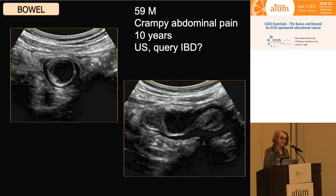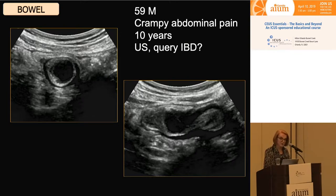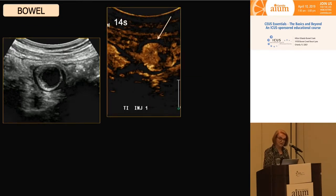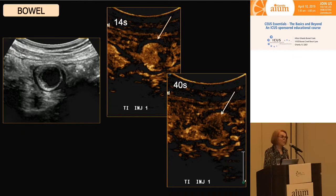Let's change gears now and look at a few cases of the bowel. This is a 59-year-old male who's had crampy abdominal pain for 10 years — the ultrasound requisition says query inflammatory bowel disease. He had two CT scans in the prior five years. When we look at this patient, we can see very easily a hypoechoic, very black mass related to the wall of the bowel. This doesn't look anything like inflammatory bowel disease — this looks like a mass in the bowel.